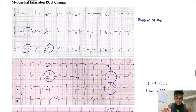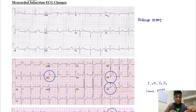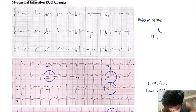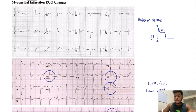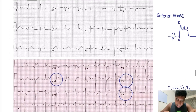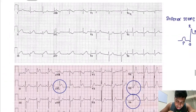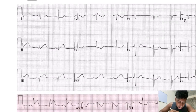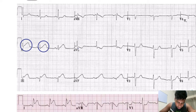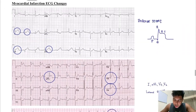Next are MI changes, where the location of leads is most important. If you see ST elevation — looking at the PQRST complex — this is called ST-elevation myocardial infarction, or STEMI. We're discussing ECG changes seen in heart attacks. In leads II, III, and aVF you can see ST elevation, which is called an inferior STEMI.